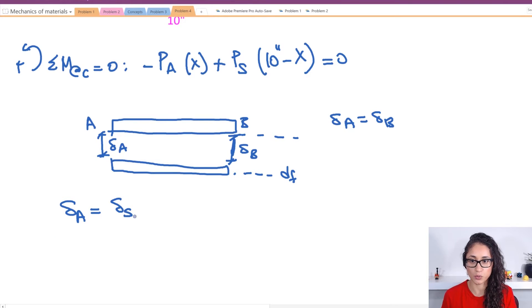So this should be S because we noted this as S because of steel. So we have PL over the area A and then the Young modulus of aluminum and this is equal to PLS. This is for the steel, area of the steel and then the Young's modulus of the steel.